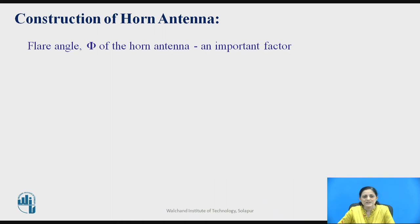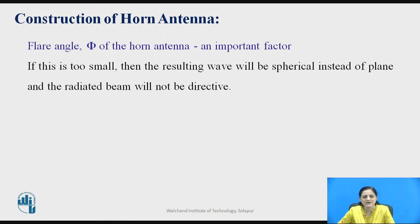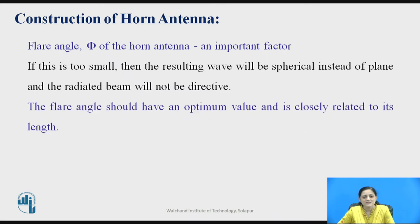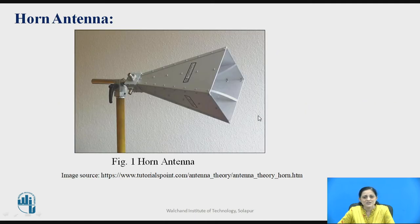The flaring is provided with an angle which is denoted by the letter phi. This flaring angle plays an important role in horn antenna. If the flaring angle is too small, then the resulting wave will be spherical instead of a plane wavefront, and the radiated beam will not be directive. Therefore, the flare angle should have an optimum value and is closely related to its length. Initially a waveguide is used, and after that the flared construction is given to the waveguide to form the horn antenna.